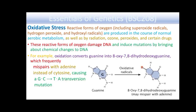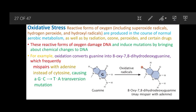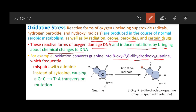Reactive forms of oxygen — including superoxide radicals, hydrogen peroxide, and hydroxyl radicals — are produced during normal aerobic metabolic processes, as well as by radiation, ozone, peroxides, and certain drugs. These reactive oxygen species damage DNA and induce mutations by bringing about chemical changes. For example, oxidation converts guanine into 8-oxo-7,8-dihydrodeoxyguanine, which frequently mispairs with adenine instead of cytosine. This causes a G-to-T transversion mutation, since guanine (a purine) is effectively converted to pair with thymine (a pyrimidine).